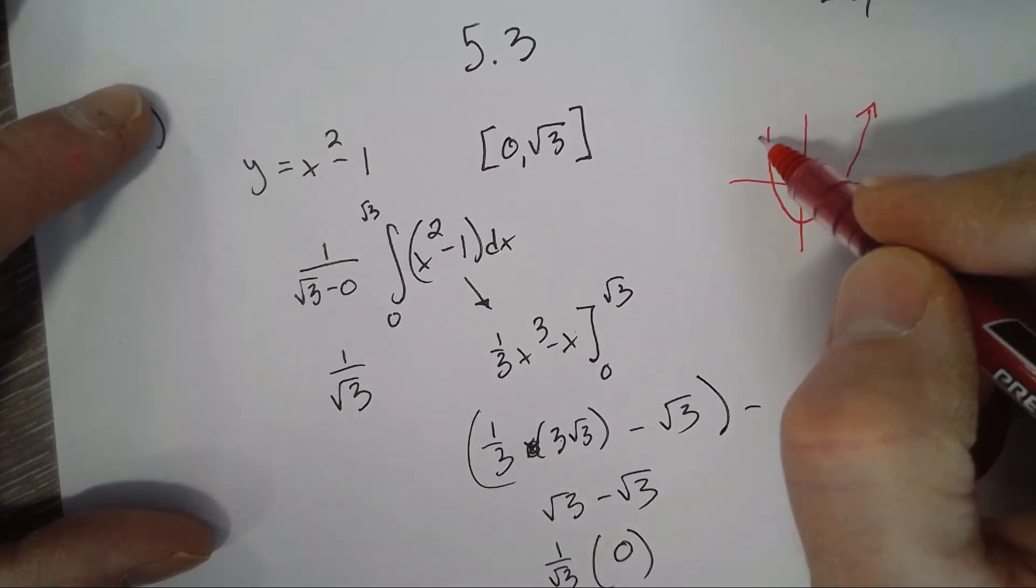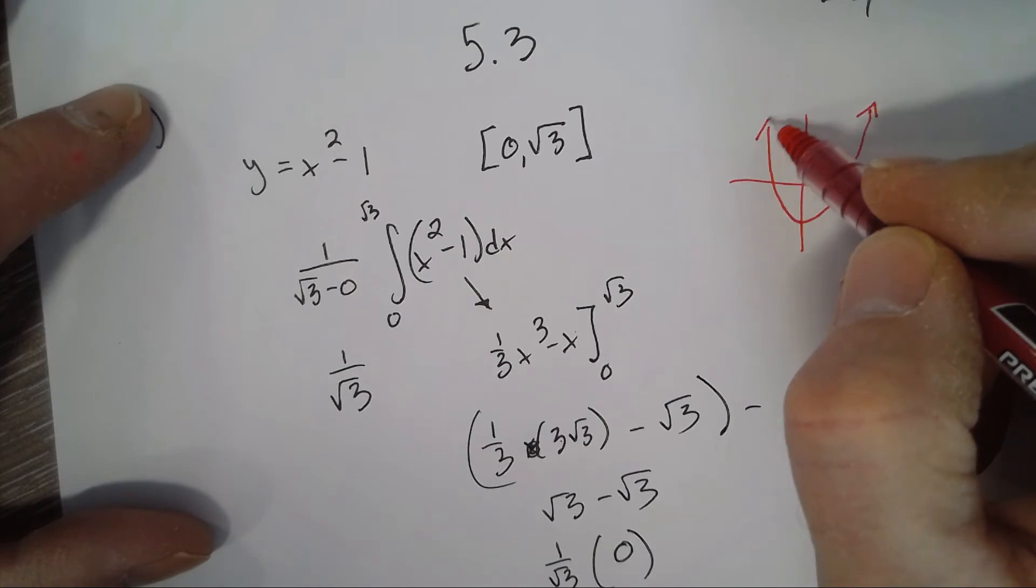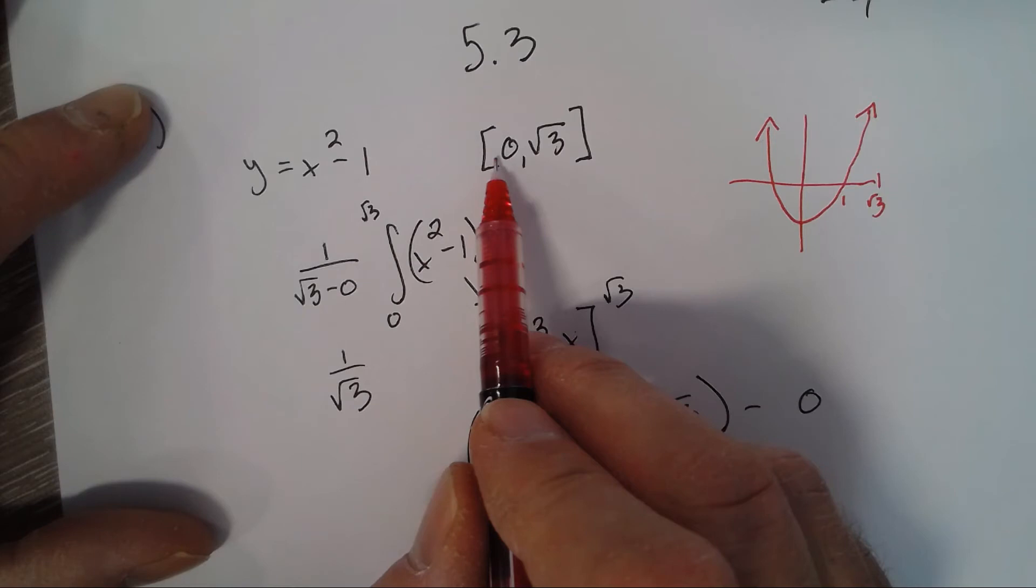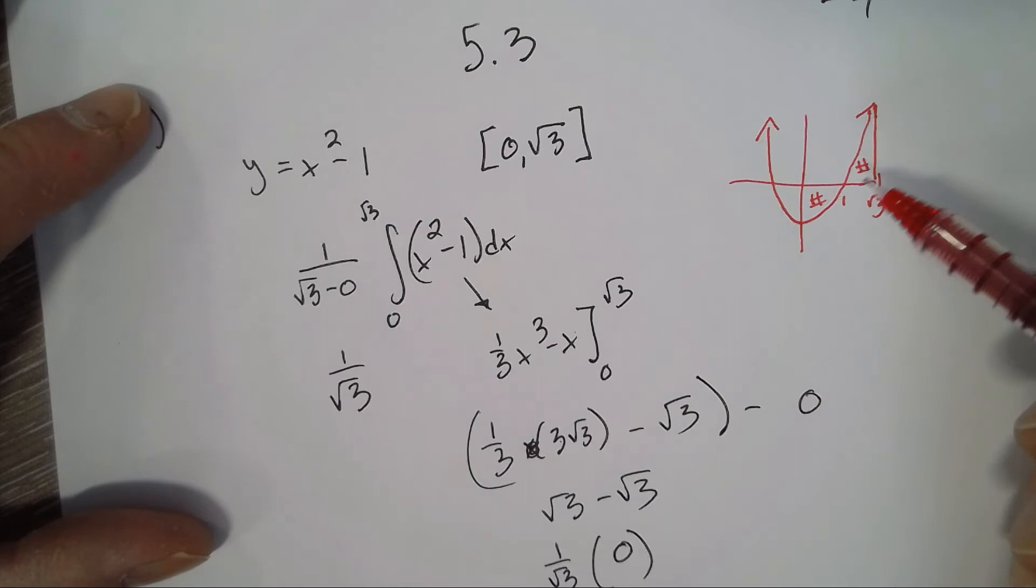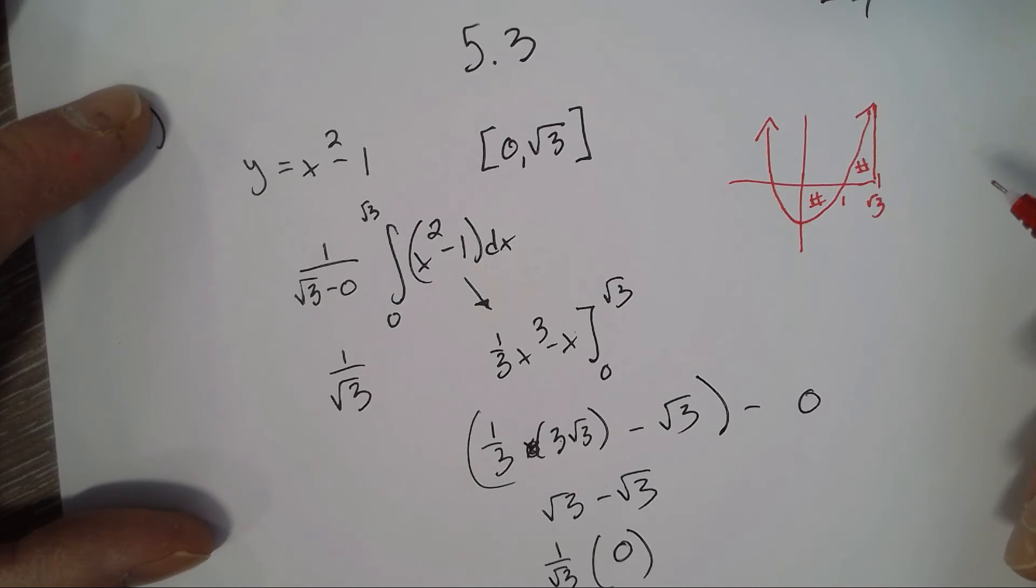That's 1, square root of 3... 0 and square root of 3, this has some number and this has some number. So here the magnitude of both of those is the same, so you end up getting 0.